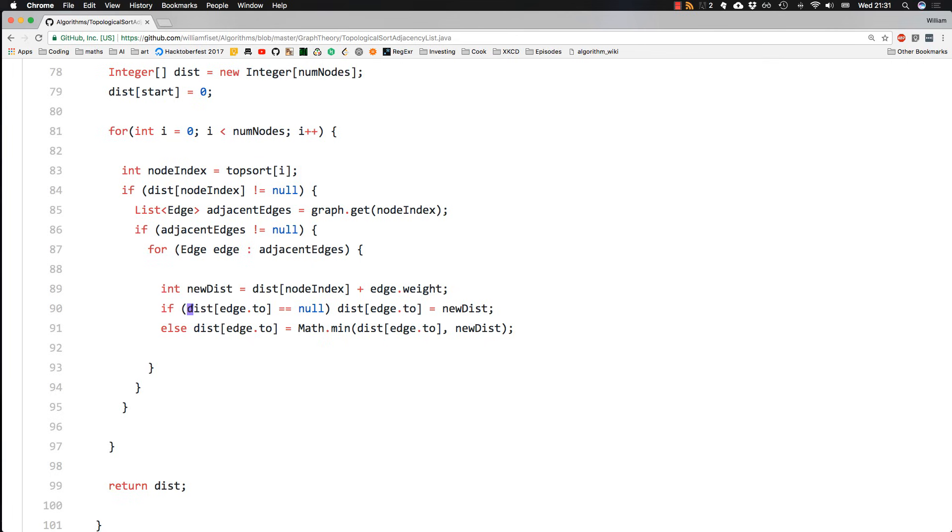Then we check, okay, has there ever been a distance set to where we want to go? This is basically the equivalent of infinity. And if so, then we just want to give the new distance.